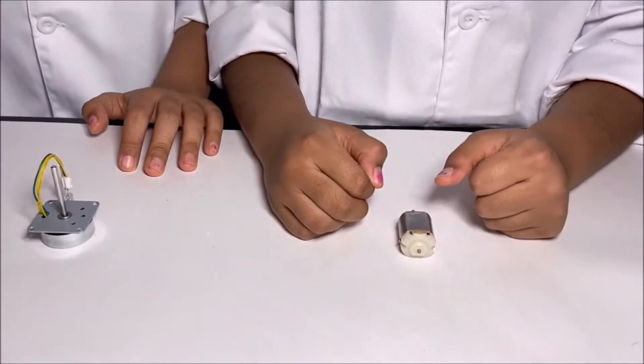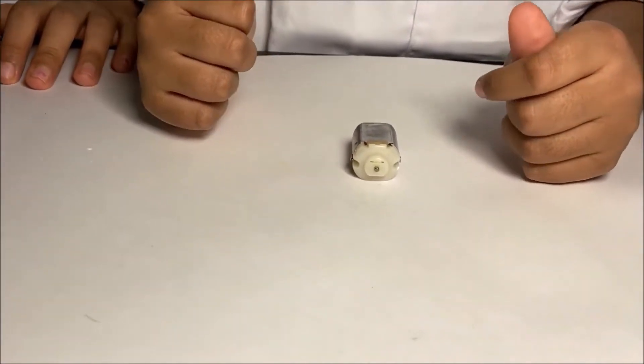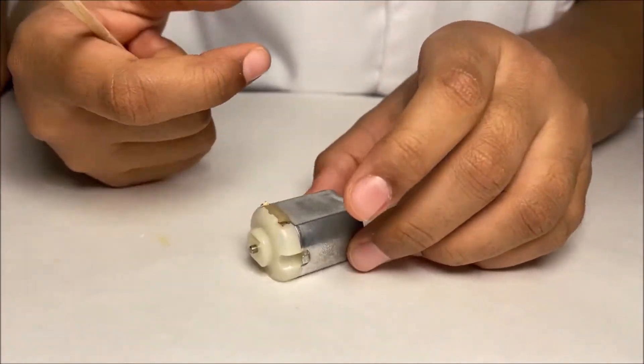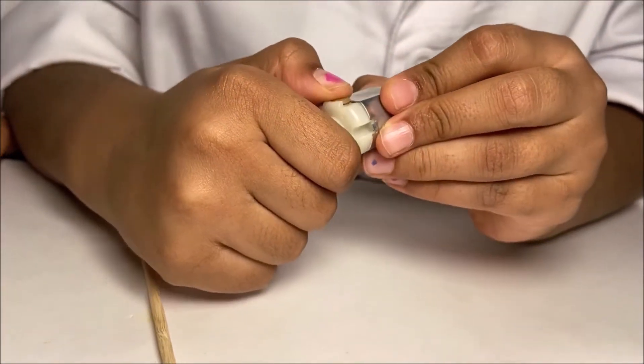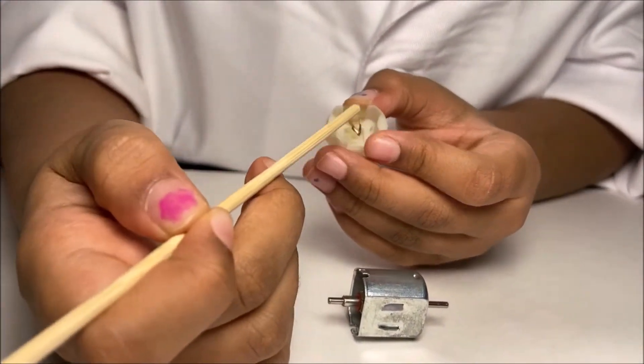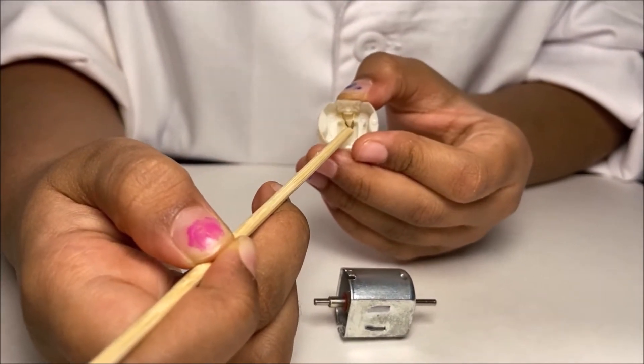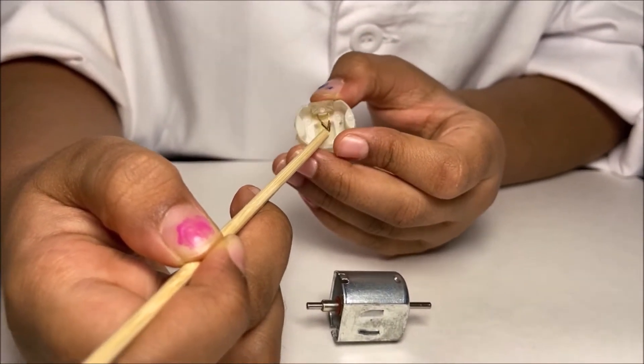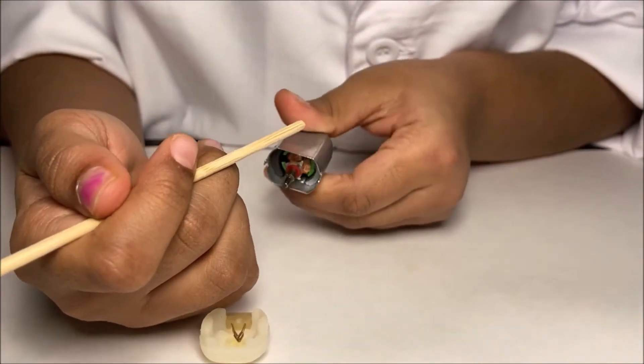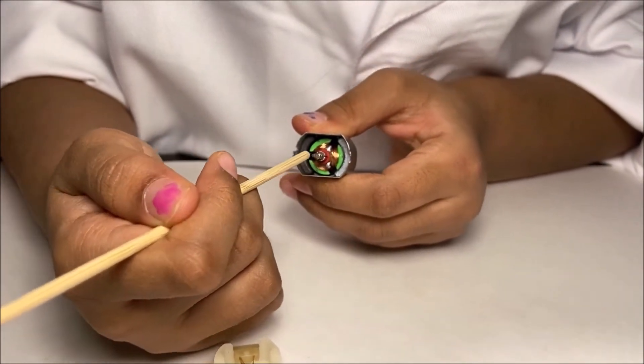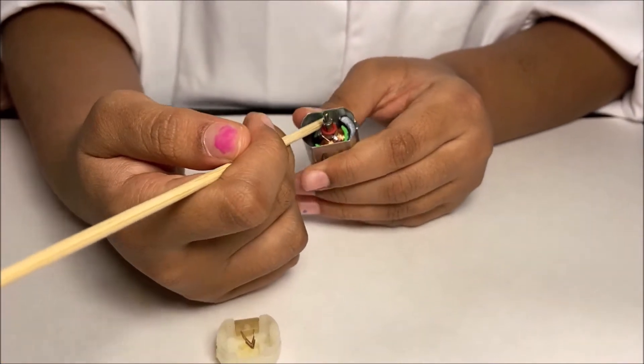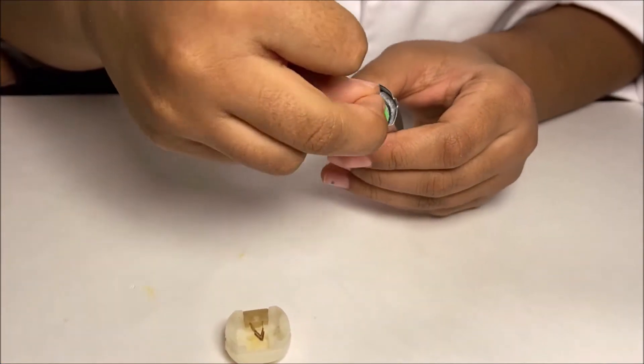First we're going to open the DC motor. These two parts are the brushes which give current to the armature. The armature is the middle part here and it gets the electricity. I'm going to get the armature out.